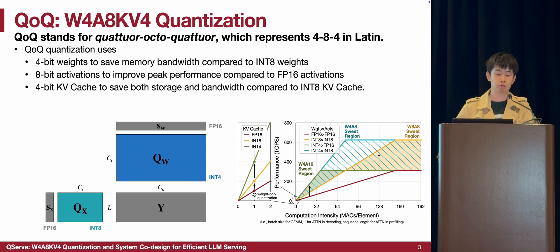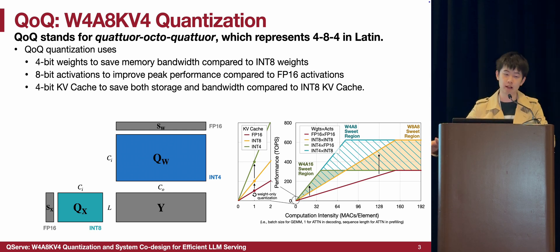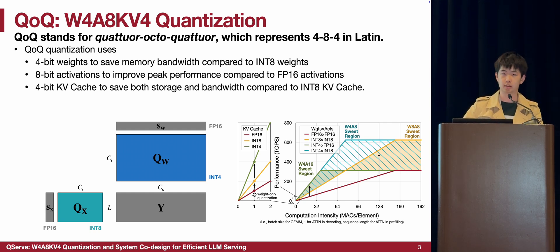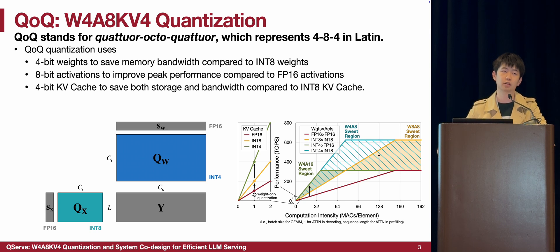Overall, we propose a new precision choice for large language model quantization — the QoQ quantization algorithm, which stands for "Quattuor," meaning 4-4-4 in Latin. As you can see on the right-hand side, the W4A8KV4 quantization can achieve the best of both worlds compared to existing quantization precisions such as W4A16 and W8A8, across different scenarios with different input batch sizes. We quantize weights to 4-bit to save memory bandwidth when loading weights, quantize activations to 8-bit to utilize the efficient INT8 tensor cores on NVIDIA GPUs, and quantize the KV cache to 4-bit per element to save KV cache memory and accelerate attention computation.